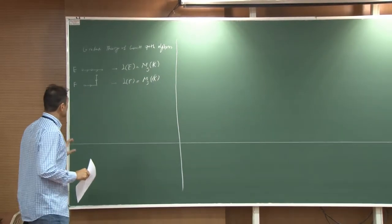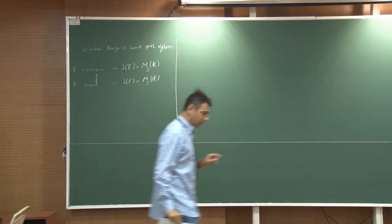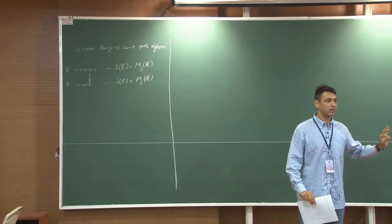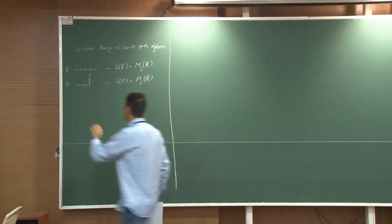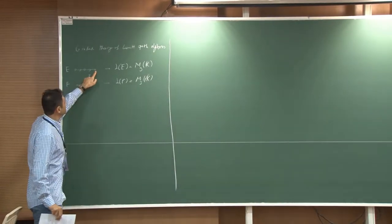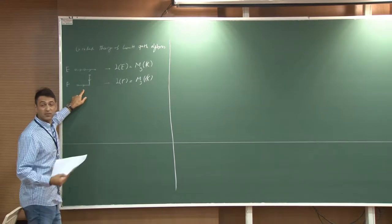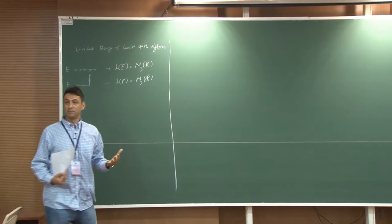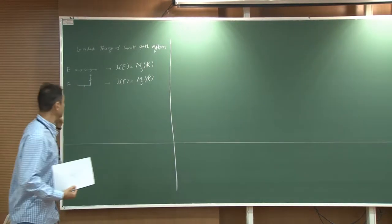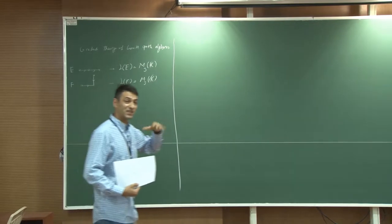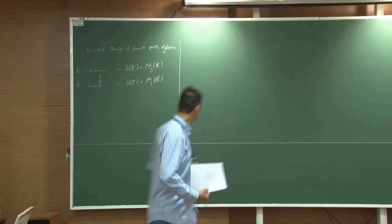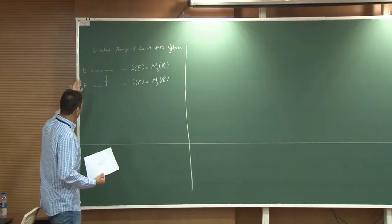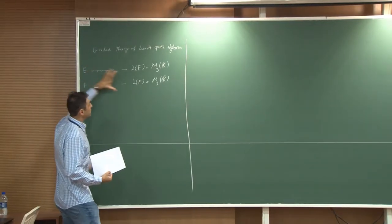There is a little problem here. The Leavitt Path Algebra apparently cannot see the length that you travel along the graph. Here you can travel two steps; here the maximum you can travel is just one — but the Leavitt Path Algebras are the same. When you get this form through L, it doesn't see the length that you travel. So the main question is: can I carry over more information from this graph into these algebras?